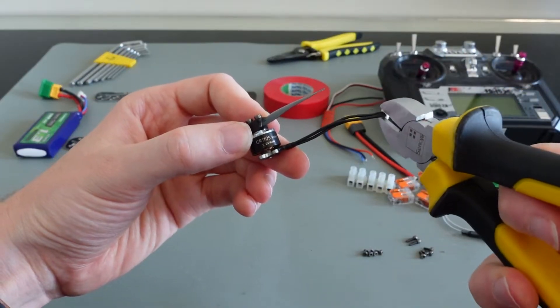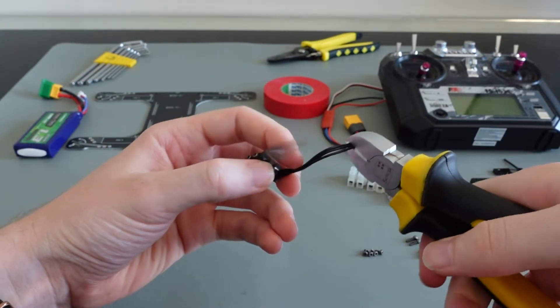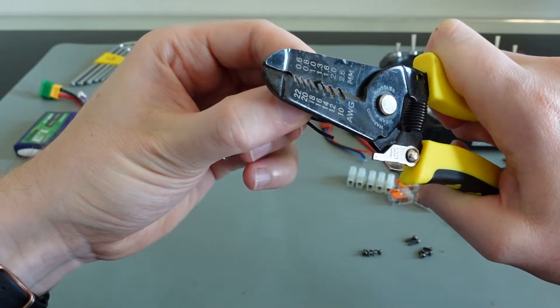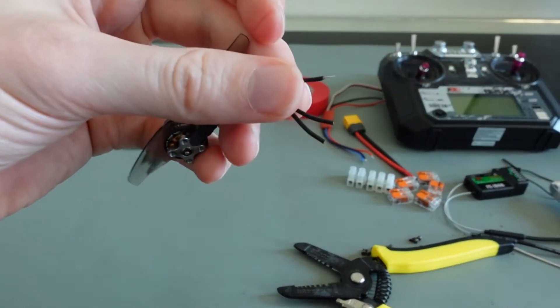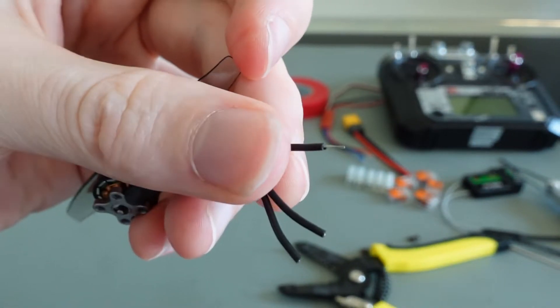Next, cut the white connector from the 3 black motor cables as you will not use it. Strip each cable carefully such that you can solder them to the frame later on. The wires are very tiny, so it could take some attempts to get this step right.